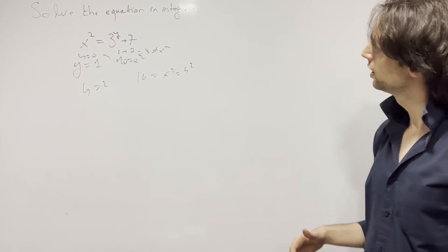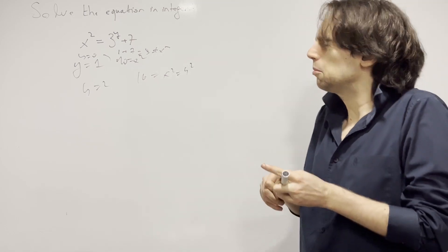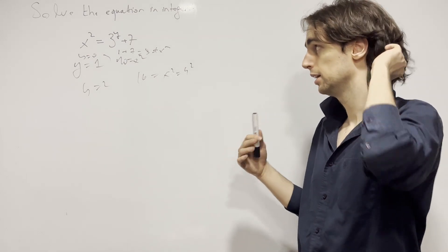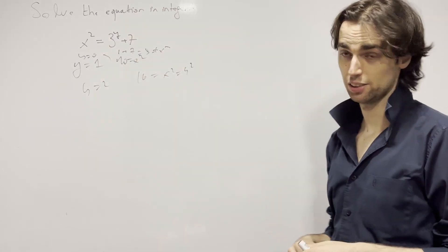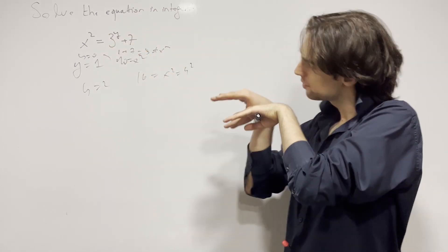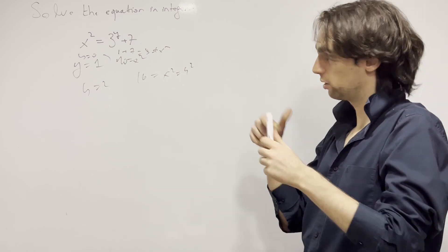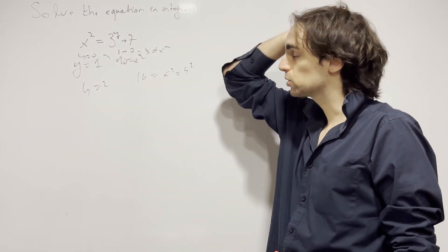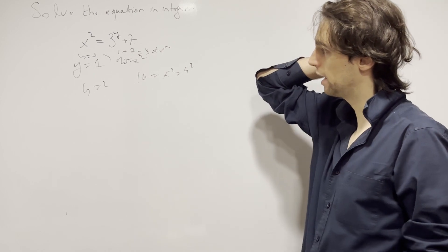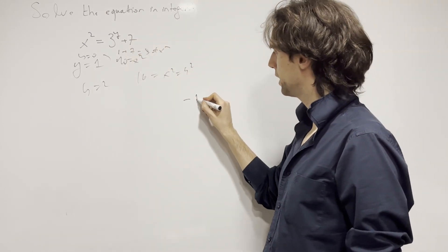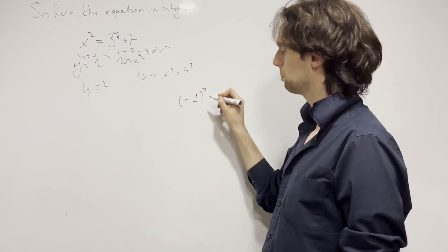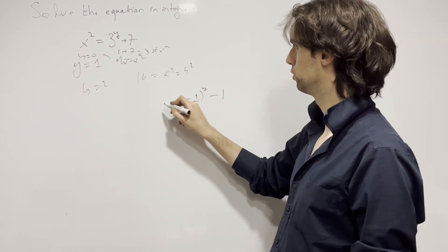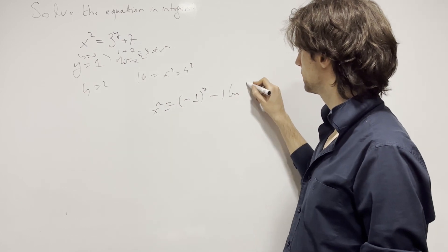Now what do we do with these sorts of problems? At the introductory level — and even on some advanced levels — it comes down to looking at modular arithmetic when you have this sort of exponential thing. You need to figure out some interesting remainder to look at. Here the interesting thing is remainders when divided by 4. We have 3 to the power of y, which gives a remainder of (-1) to the power of y modulo 4, plus 7. And 7 also gives a remainder of -1. So x squared is congruent to this modulo 4.